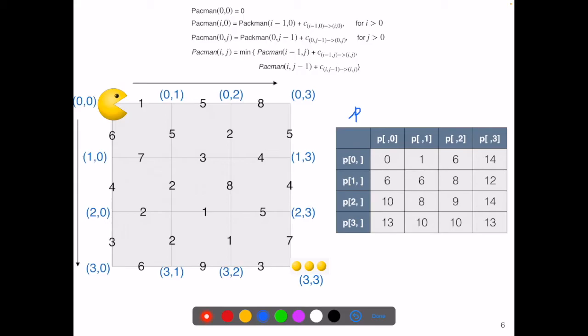So for p(0,0) base case, its value is 0. Then we get to the special cases, the top and the left edges. So p(1,0) will be p(0,0) plus the cost of 6. So that'll be 6.